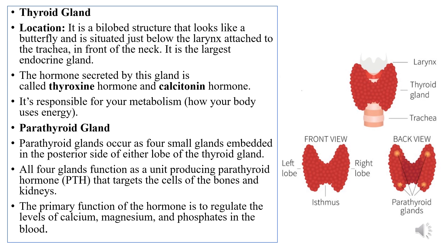Remember, the thyroid gland is referred to as the largest organ or largest gland of the endocrine system. The hormones secreted by the thyroid gland are called thyroxine and calcitonin, which are responsible for metabolism — how your body uses energy.